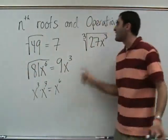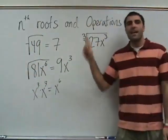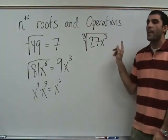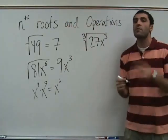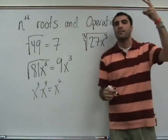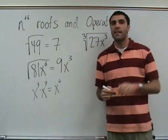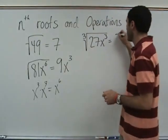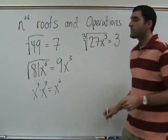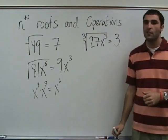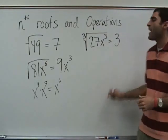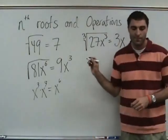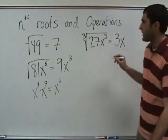Something times itself times itself again equals 27x cubed. So what times what times what is 27? Three. And 3x. What times what times what is x cubed? x. That's the main concept.